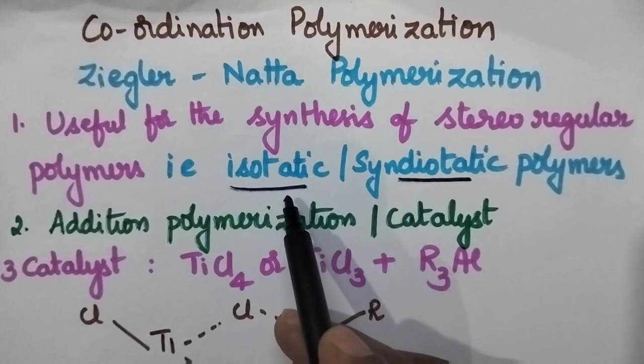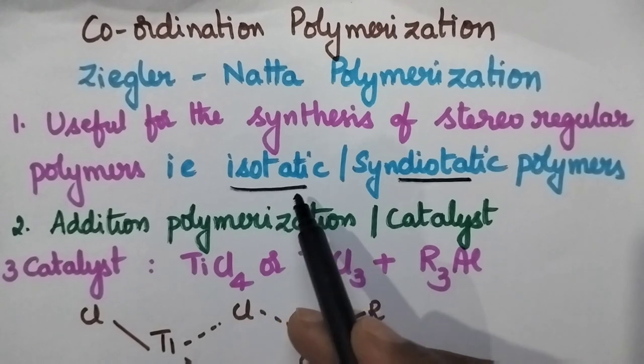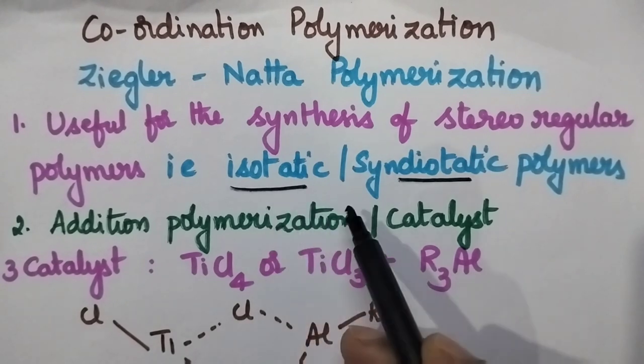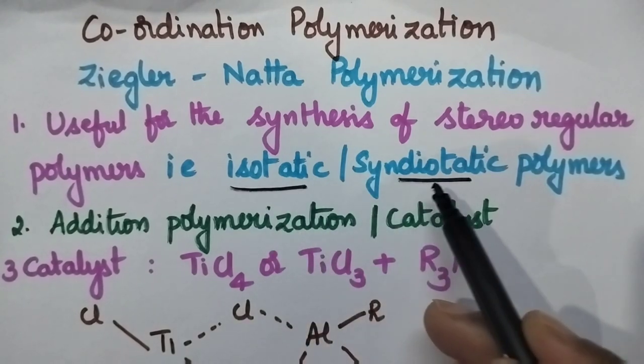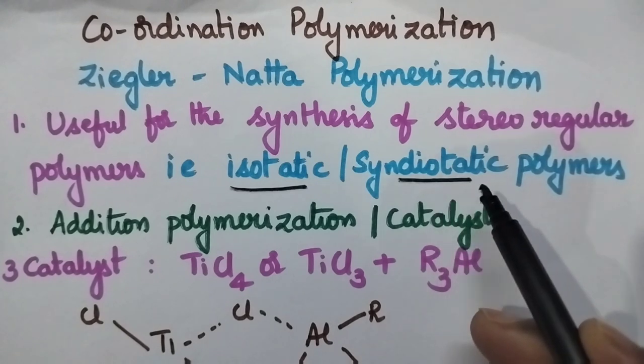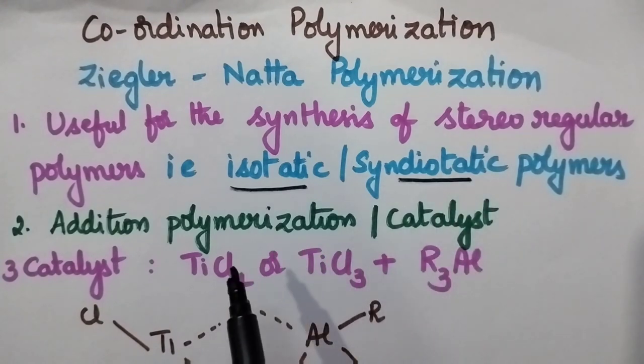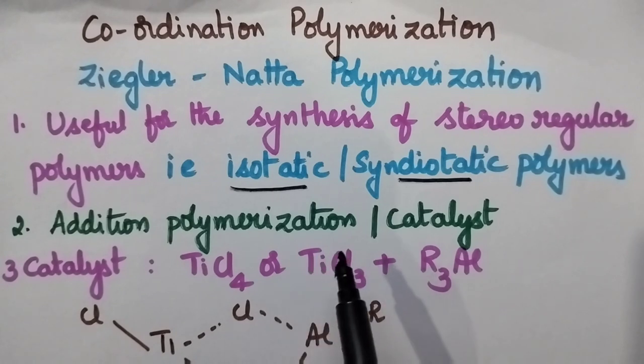Isotactic means always the substituents are present on the same side of the main chain. Syndiotactic means the substituents are arranged in alternative fashion. So, the importance of coordination polymerization is to synthesize stereospecific polymers.